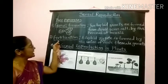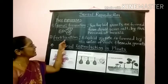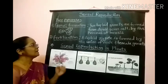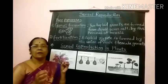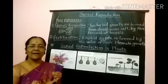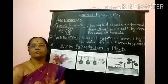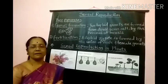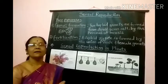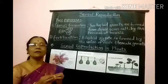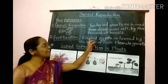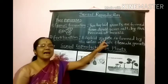The next step is fertilization. In this process, one male gamete and one female gamete, which are haploid, unite with each other and form a diploid zygote.